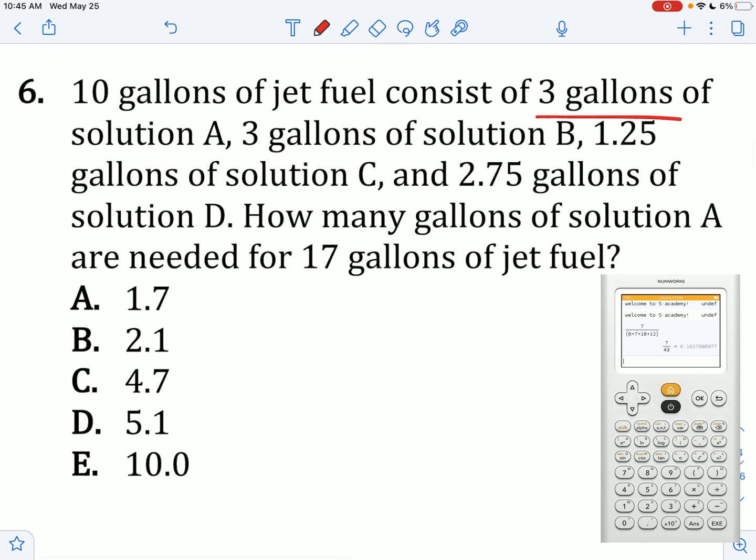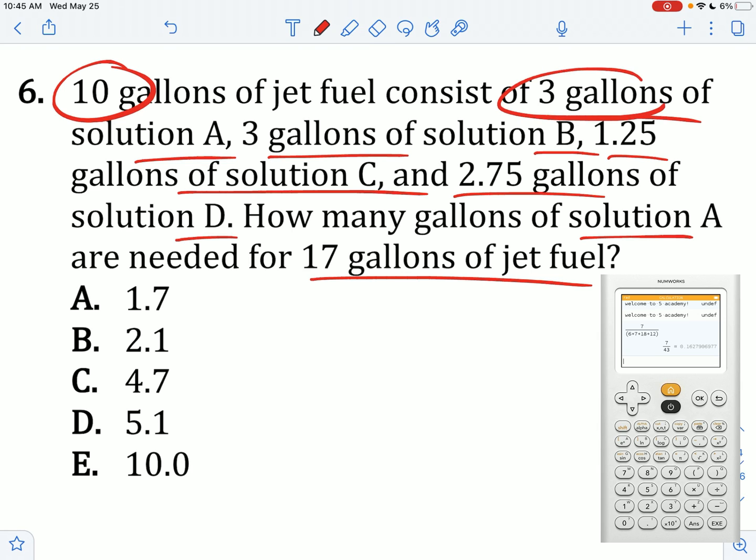10 gallons of jet fuel consist of 3 gallons of solution A, 3 of solution B, 1.25 gallons of this and 2.75 of this. How many gallons of solution A are needed for 17 gallons of jet fuel? For 10 gallons of jet fuel, we have 3 gallons of A. So for 17 gallons of jet fuel, what's the proportion? 10x equals 51. Divide both sides by 10, we get x equals 5.1.